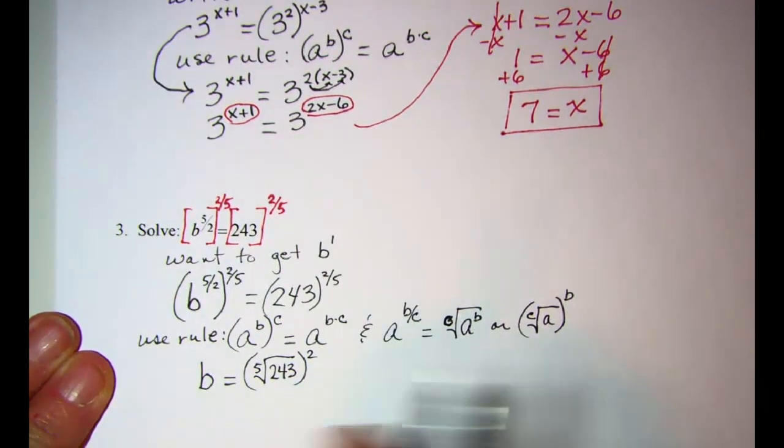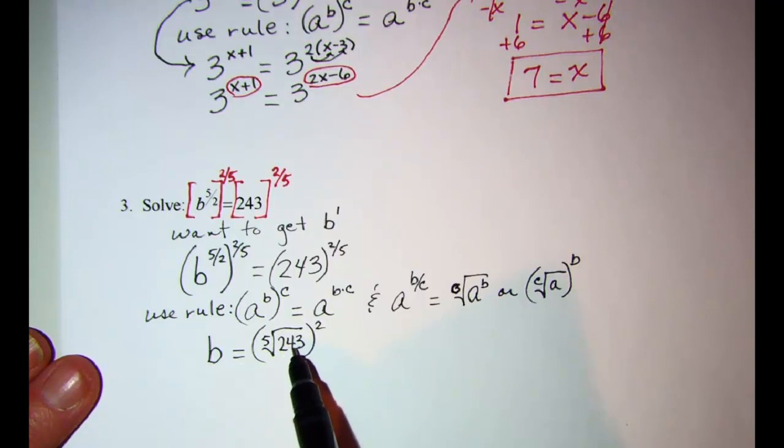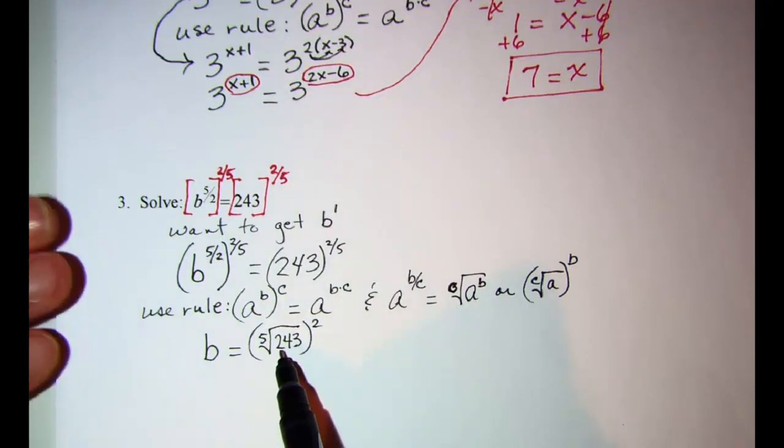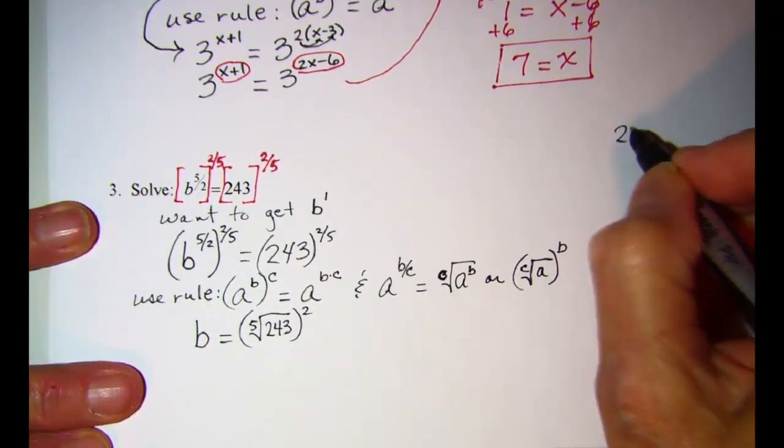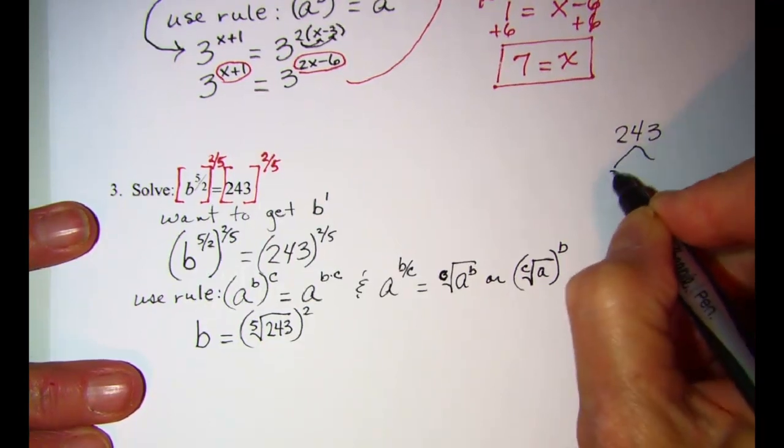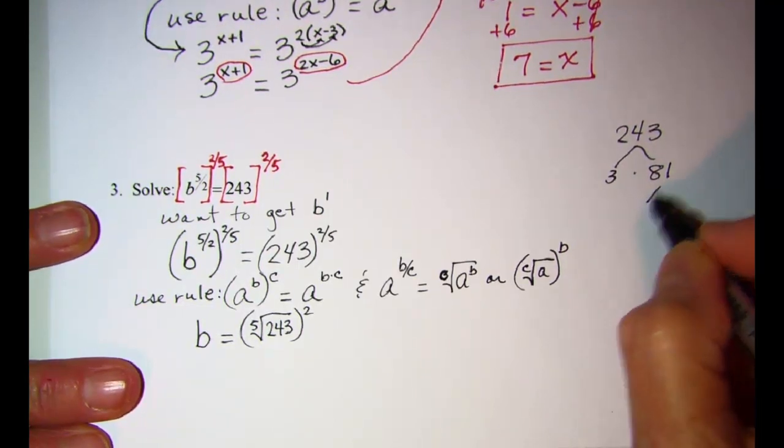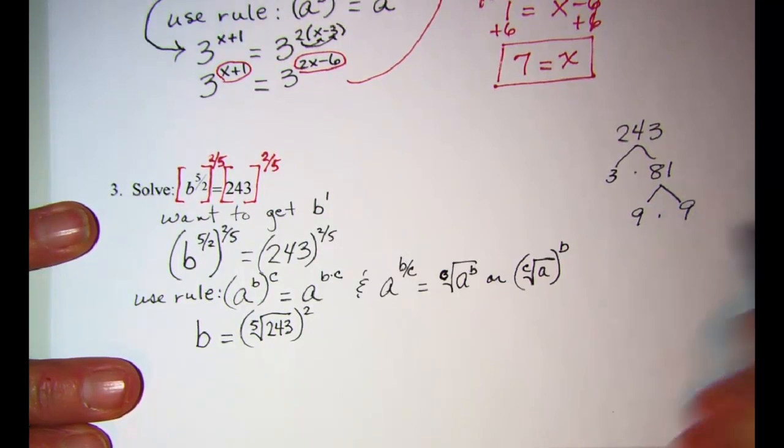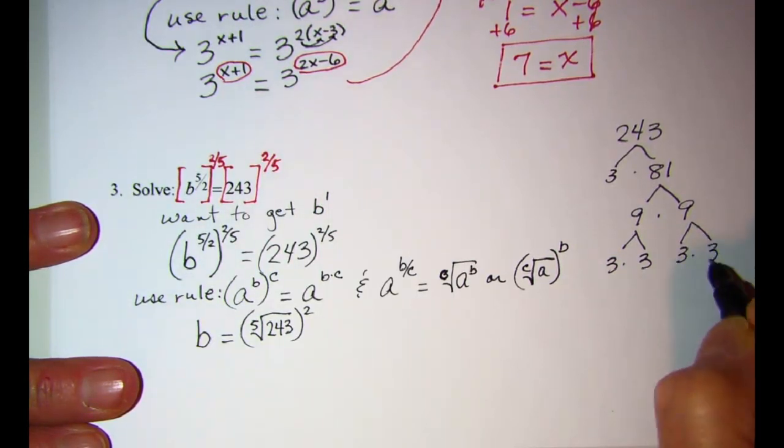Now to simplify 243, if we add these digits we have 2+4 is 6, plus 3 is 9. Since the sum of the digits is 9 and that is divisible by 3, then I know that 243 is divisible by 3. So I can use a factor tree and break this up: 3 times 81, and break 81 into 9 times 9, and then each of those 9's I can break into 3 times 3.